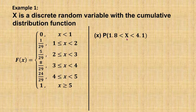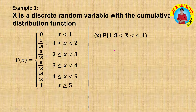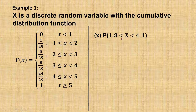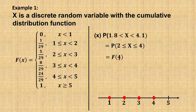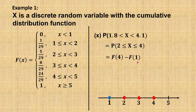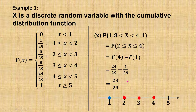Find the probability of x greater than 1.8 and less than 4.1. Since x is a discrete random variable with possible values 1, 2, 3, or 4, when x is greater than 1.8 and less than 4.1, the possible values are 2, 3, and 4. So we find P(2 ≤ X ≤ 4), which equals F(4) minus F(1). F(4) equals 24 over 29 and F(1) equals 1 over 29, giving the answer 23 over 29.